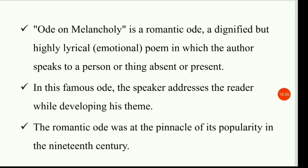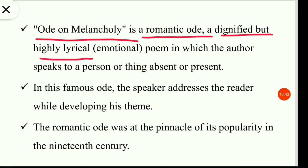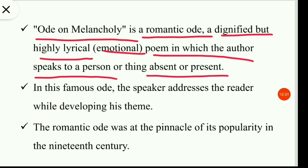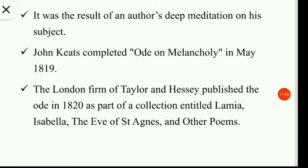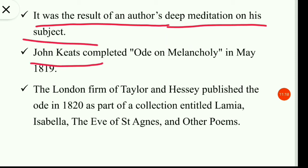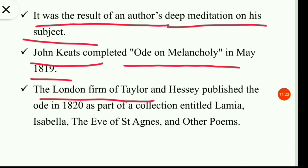Ode on Melancholy is a romantic ode — a dignified but highly lyrical or emotional poem in which the author speaks to a person or thing, absent or present. In this famous ode, the speaker addresses the reader while developing his theme. The romantic ode was at the pinnacle of its popularity in the 19th century. It was the result of an author's deep meditation on his subject. John Keats completed Ode on Melancholy in May 1819. The London firm of Taylor and Hessey published the ode in 1820 as part of a collection entitled Lamia, Isabella, The Eve of Saint Agnes, and Other Poems.